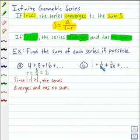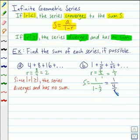For letter B, again we can find r by dividing 1 fifth by 1, that gives us 1 fifth. So the absolute value of r is less than 1. We can find S by using our formula, where a sub 1 is 1, and r is 1 fifth. So this gives us 1 divided by 4 fifths, which equals 5 fourths for the sum.